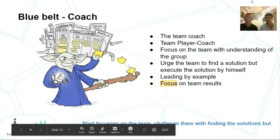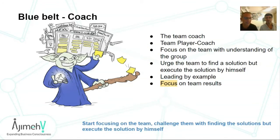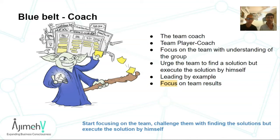The blue belt Scrum Master starts to be a coach. They have all the technical stuff intact, they're relaxed, and they start thinking about how to make the team grow — how to move back a little and let the team fill the space being left. He still guards the team; when something falls he catches it. He lets the team decide but helps them decide. He gives them the tools but lets them make decisions — starting to be aware of his role not as a Scrum worker but as a team coach, challenging them to find solutions.